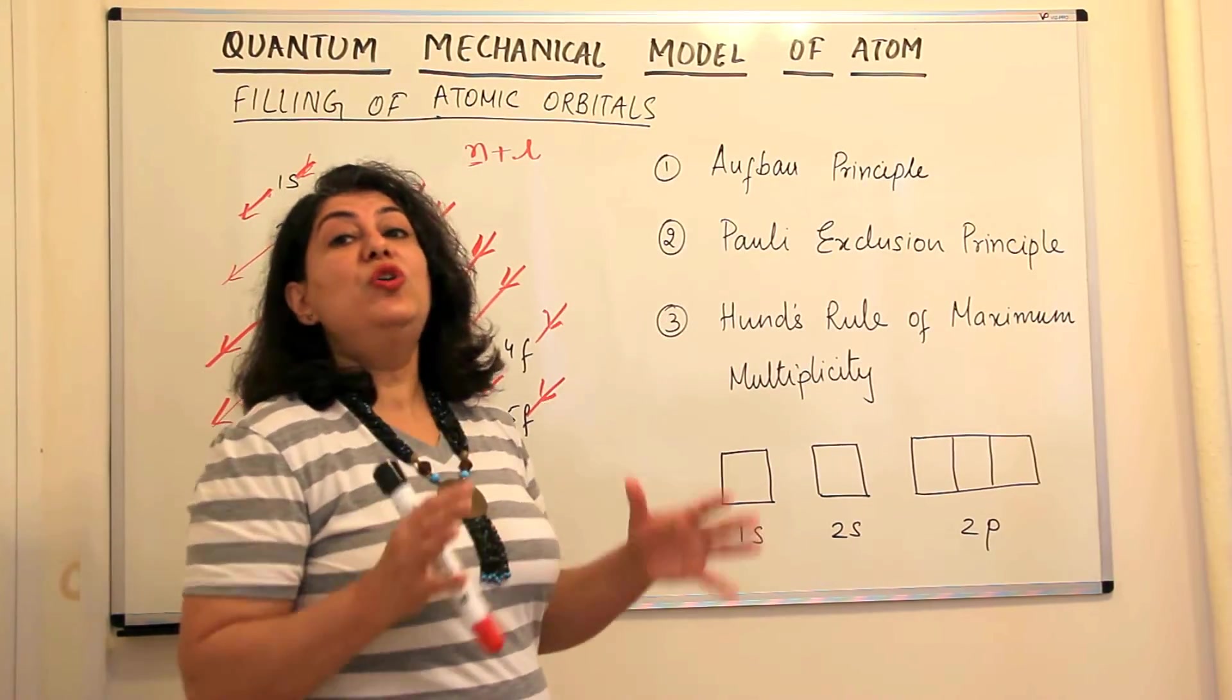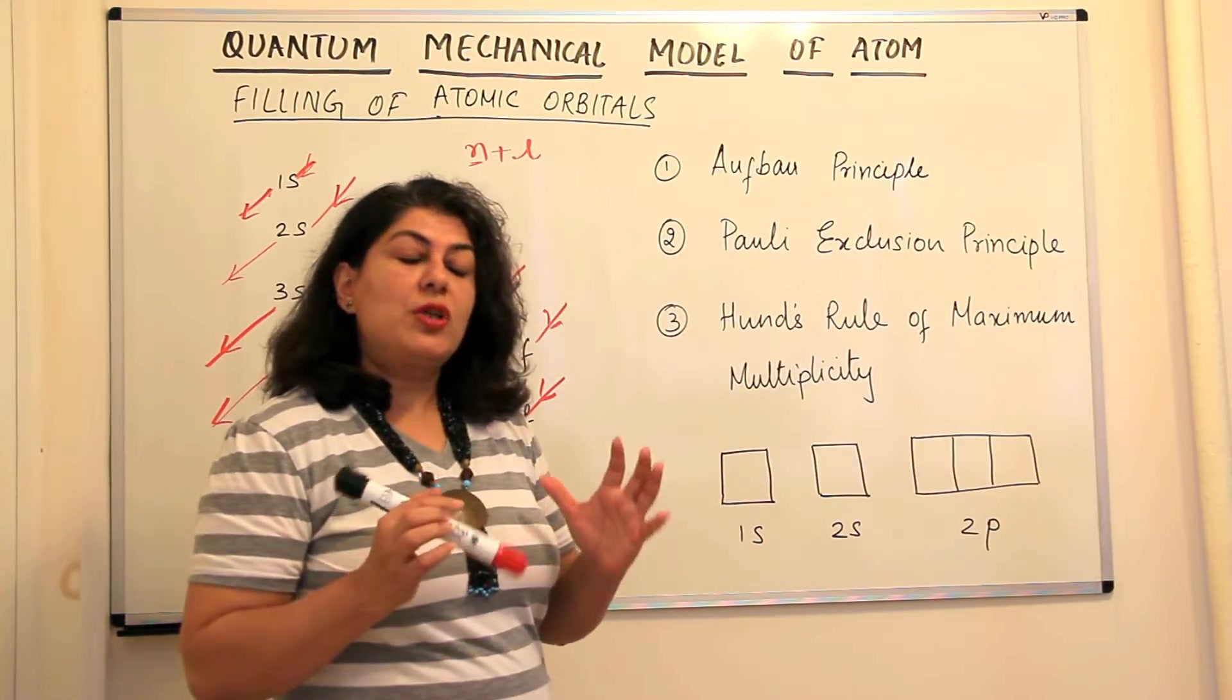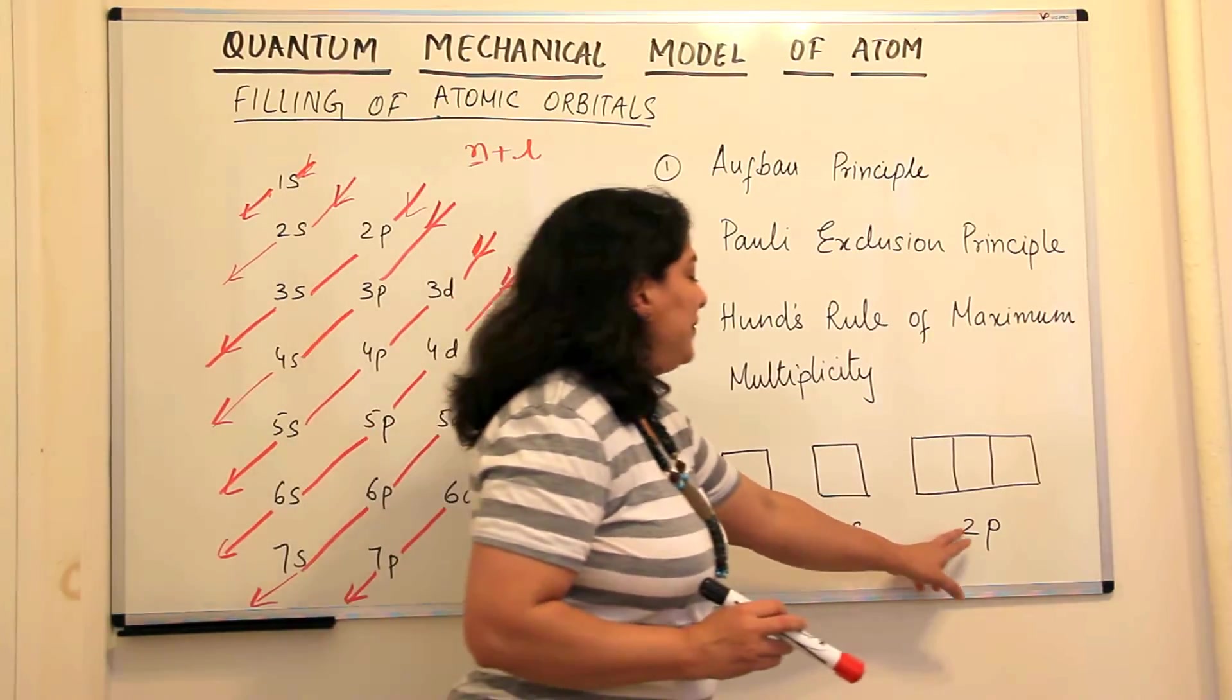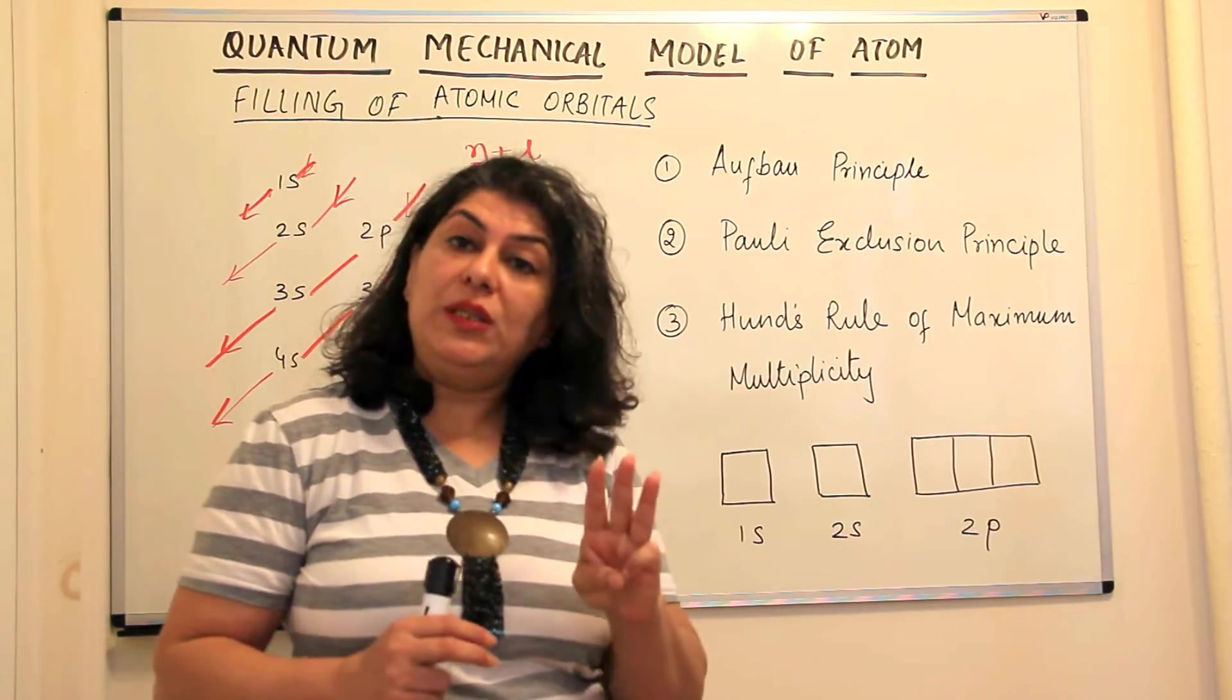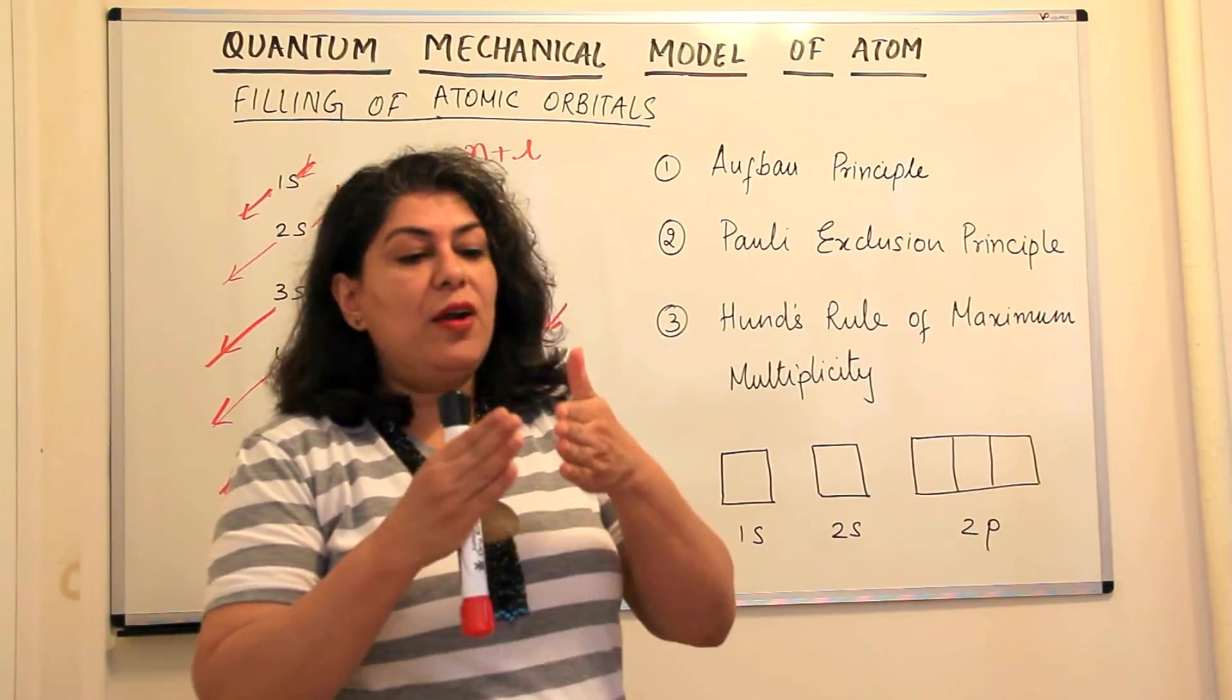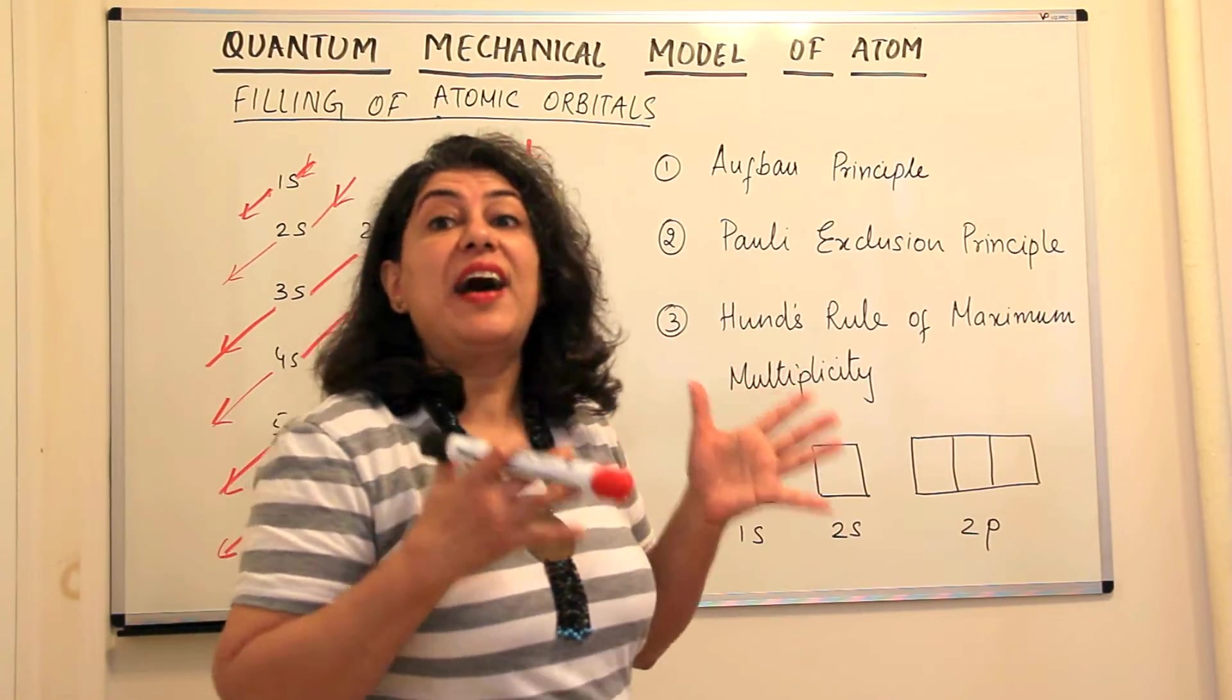The third is the Hund's rule of maximum multiplicity. This talks about degenerate orbitals. Do you see that if this is the 2p subshell, it has three orbitals px, 2px, 2py and 2pz but all the three 2p orbitals are identical. They are only different in their directions but their energies are identical. So we say they are degenerate.